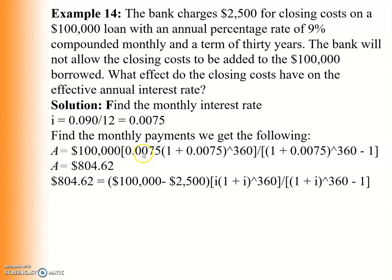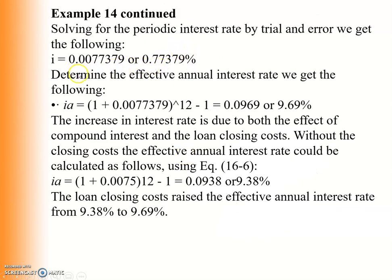By trial and error, we get a monthly interest rate of approximately 0.7739%. Converting to an annual interest rate: (1 + 0.7739%)^12 - 1 = 9.69%. This 9.69% is the effective annual interest rate or annual yield considering closing costs. Without closing costs, at 0.75% per month, the annual yield is 9.38%.